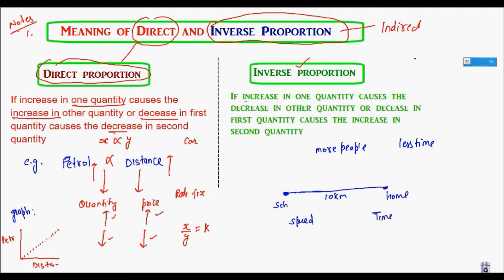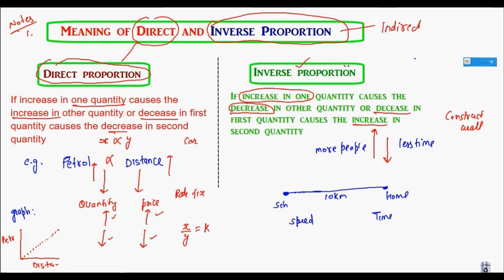Now let's go for the meaning of inverse proportion. Two quantities are said to be in inverse proportion if an increase in the first causes the second quantity to decrease, and vice versa: a decrease in the first quantity causes the second to increase. For example, in a construction job where we are constructing a wall, if I increase the number of workers, the time taken will be less. So if I increase the first, the second is decreasing — this is an example of inverse proportion.